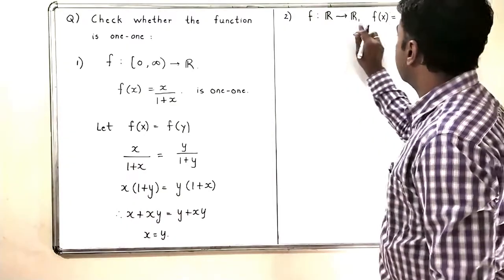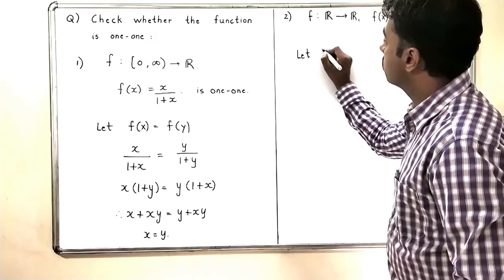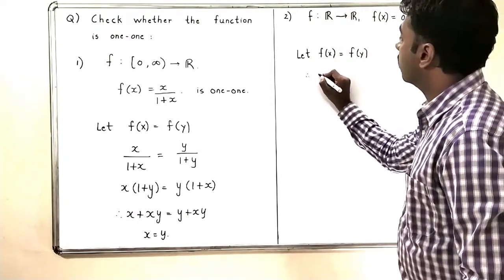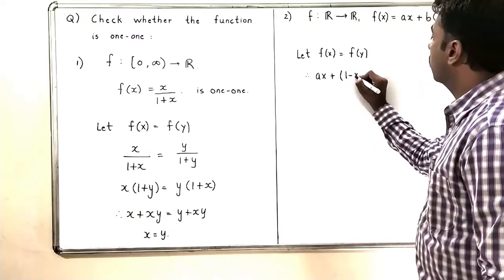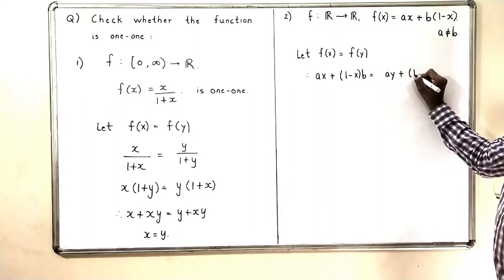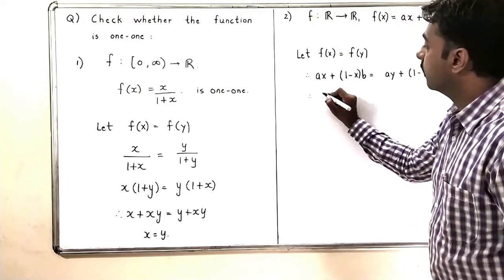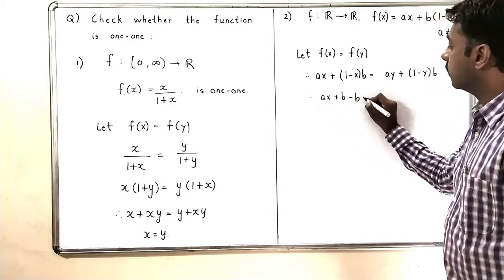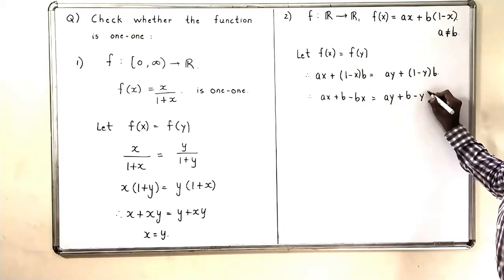Let us check whether this function is one-to-one or not. Let f(x) = f(y). Therefore, I get ax + (1 - x)b = ay + (1 - y)b. Simplifying: ax + b - bx = ay + b - yb.